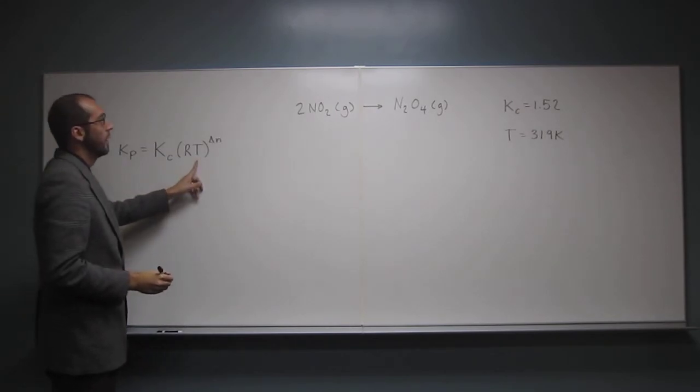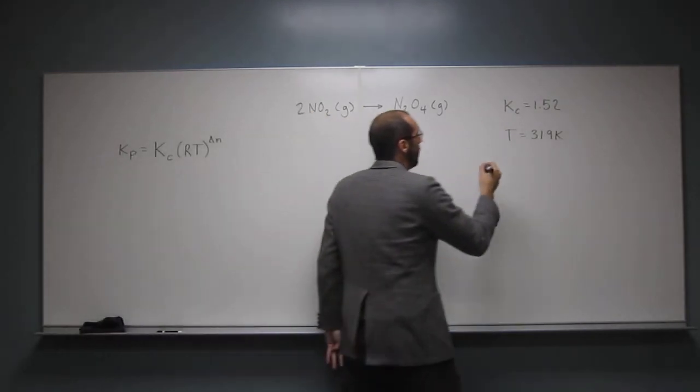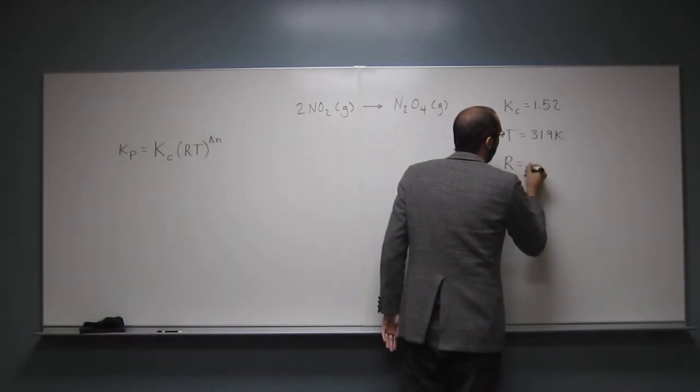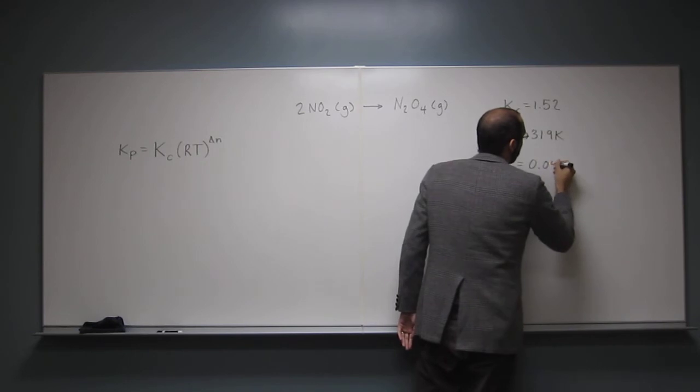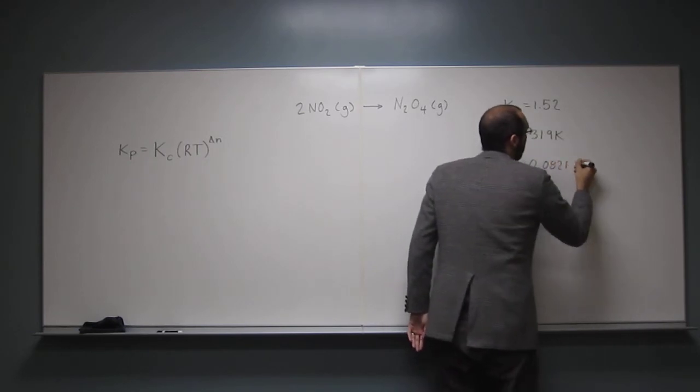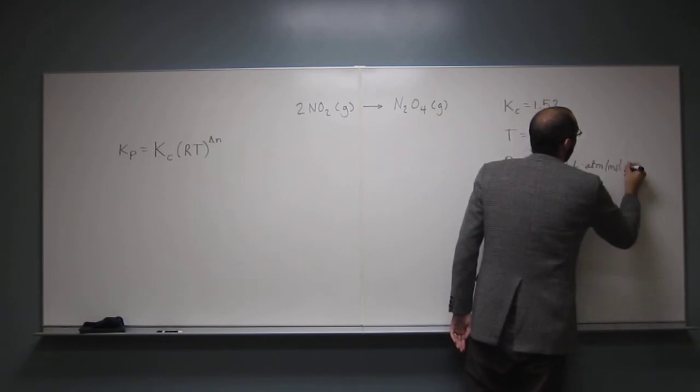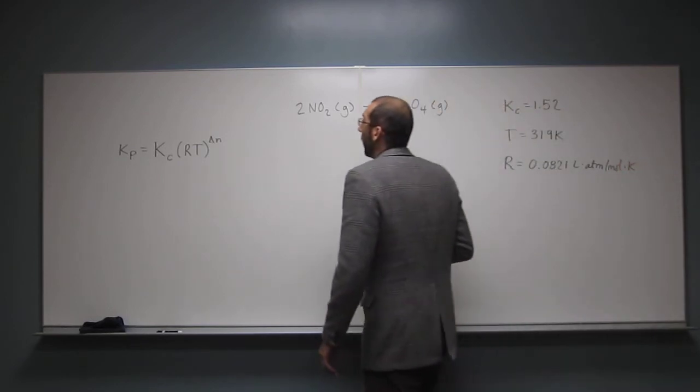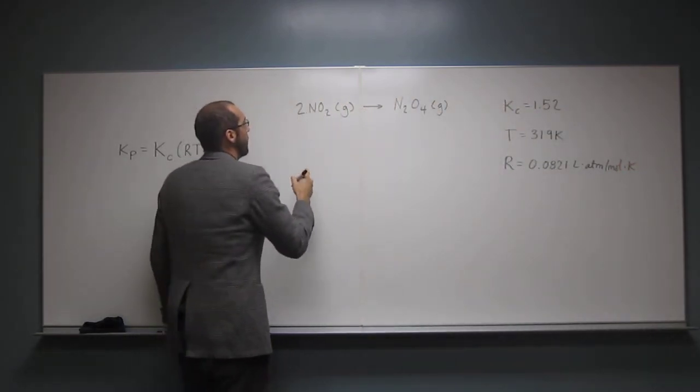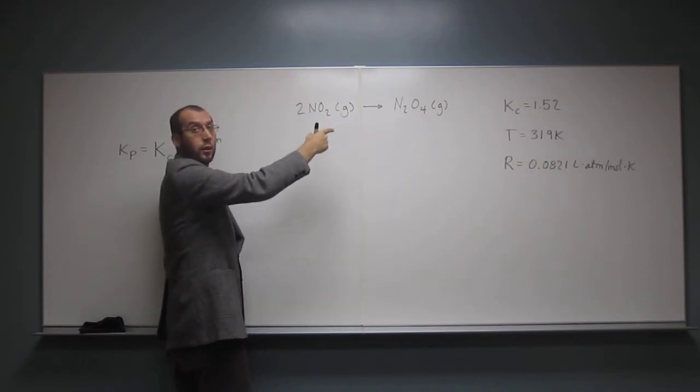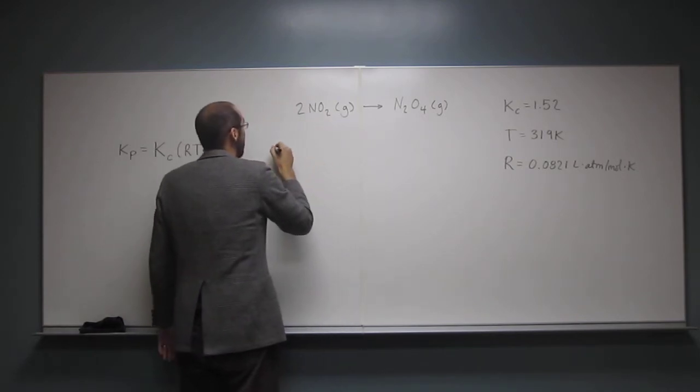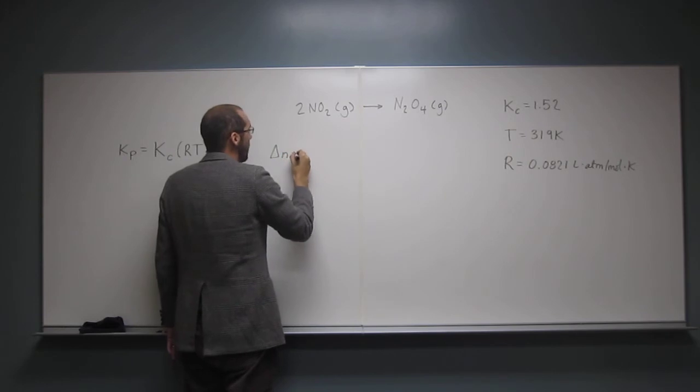Well, we've got T and we've got Kc. Remember, R is just going to be the gas constant, 0.0821 liter atm per mole Kelvin. But delta N, we get that from the reaction equation up here. So delta N is going to be the change in the number of moles.